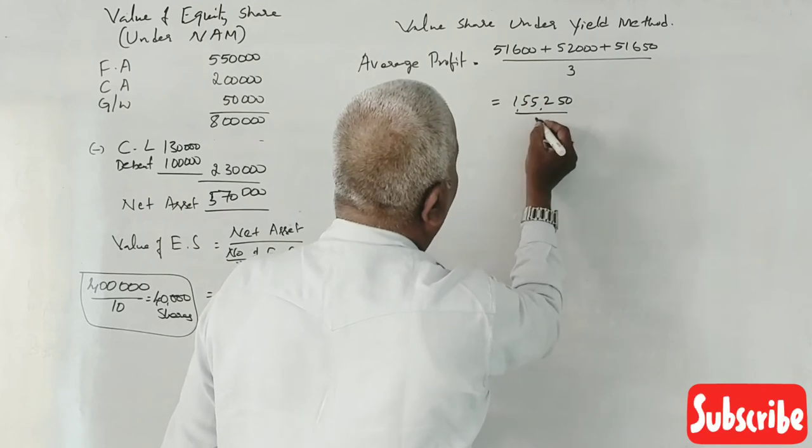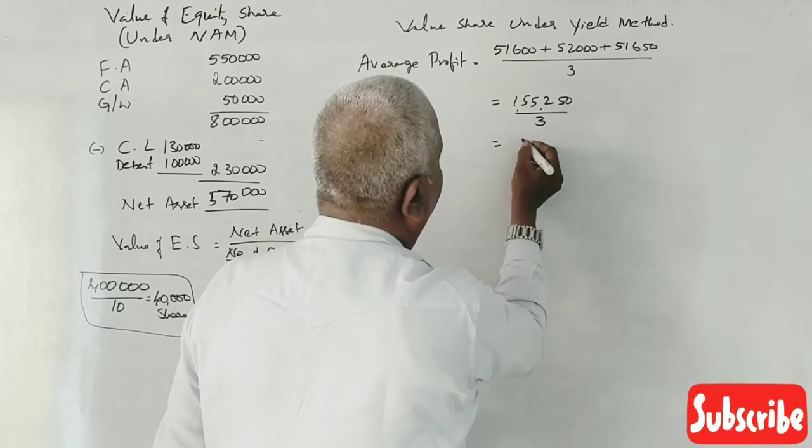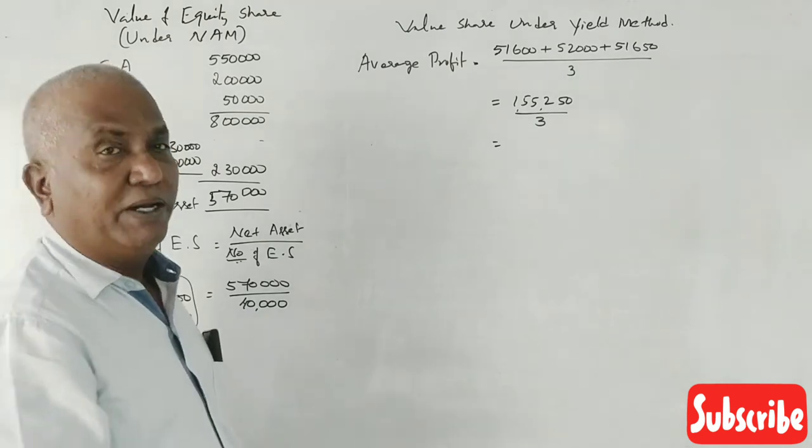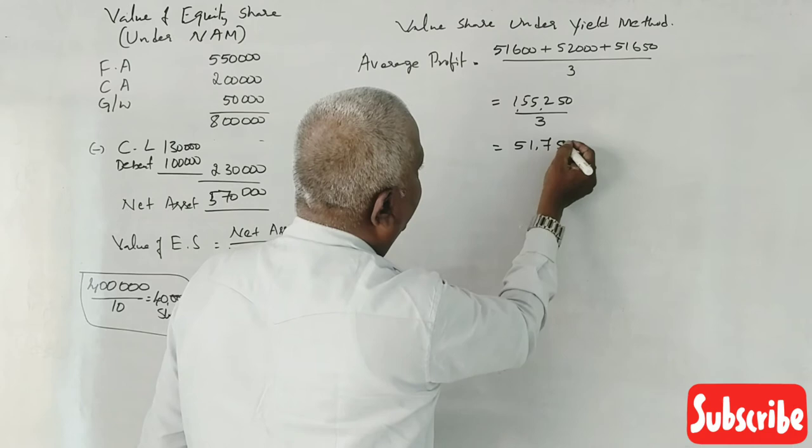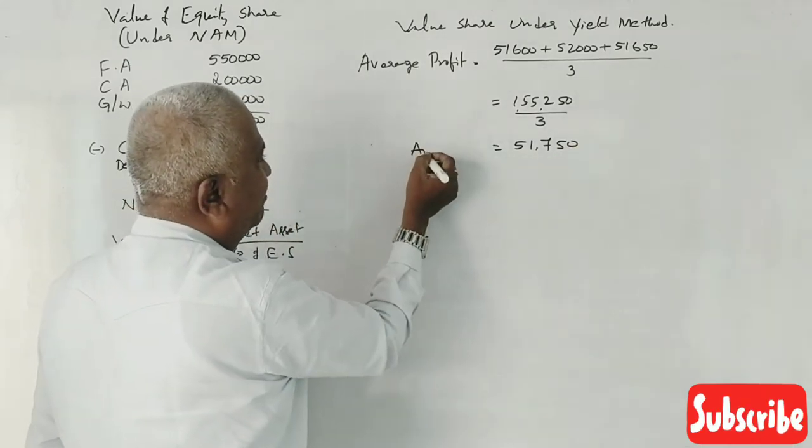1,55,250 divided by 3. Average profit is 51,750.